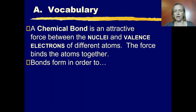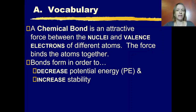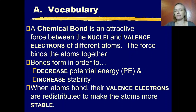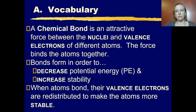Atoms bond in order to decrease their potential energy and increase their stability. When atoms bond, their valence electrons get redistributed to make the atoms more stable.